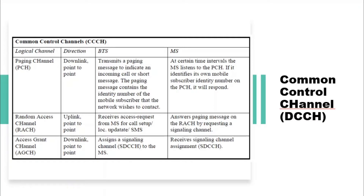The CCCH serves for call setup and other information exchange procedures. It consists of the following logical channels: the Paging Channel (PCH), used to call a particular mobile station in a set of neighboring cells called a location area; and the Random Access Channel (RACH), used by the mobile station on the uplink carrier containing the control time slots to declare their need to be connected with the base station.